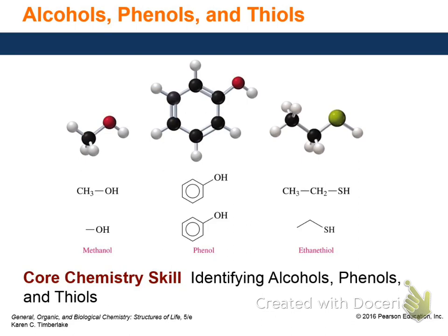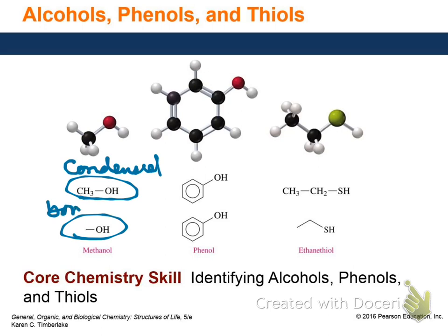You need to be able to identify these structures either as condensed Lewis structures or as bond line drawings. In bond line structures for alkanes we usually don't draw the H's, but when a functional group like an alcohol, phenol, or thiol is present, we always draw the H that's attached to the heteroatom.